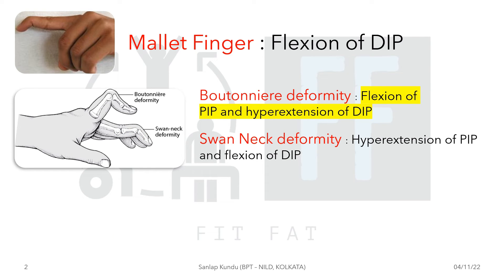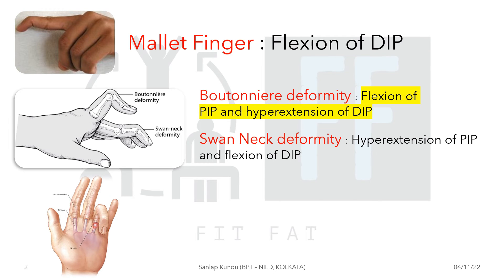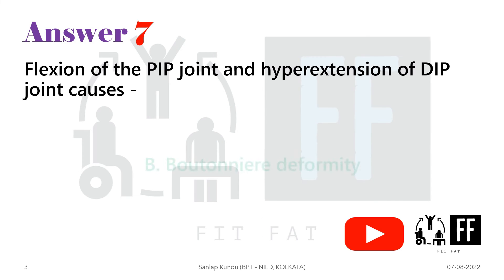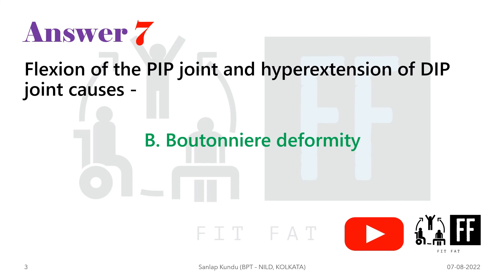Other than these three options, there is also trigger finger. It is mainly due to a painful snapping phenomenon that occurs as the finger flexor tendons suddenly pull through a tight A1 pulley portion of the flexor sheath. So the answer to question number 7 is option B — boutonière deformity.